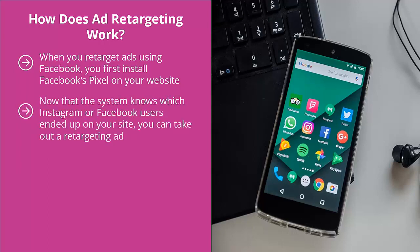Now that the system knows which Instagram or Facebook users ended up on your site, you can take out a retargeting ad. This ad can promote a deeper page, or it can promote your mailing list directly. When people who have visited your site go back to Facebook or Instagram, they start seeing your ads. This is like shooting fish in a barrel — you're essentially reminding them to come back.